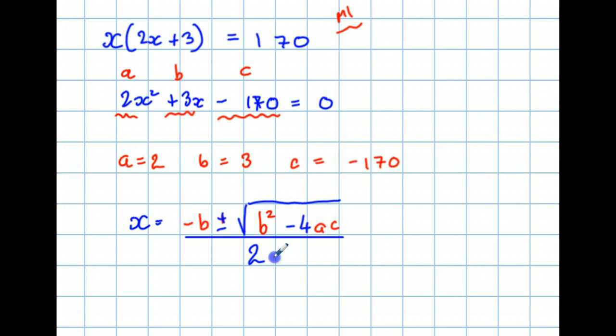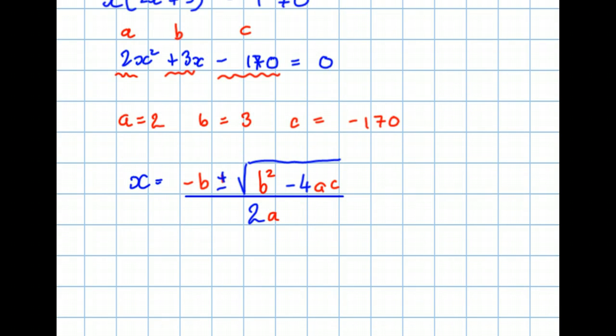So, all I have to do is carefully write down that formula with A replaced by 2, B replaced by 3, and C replaced by minus 170. So, we get x is equal to minus 3,